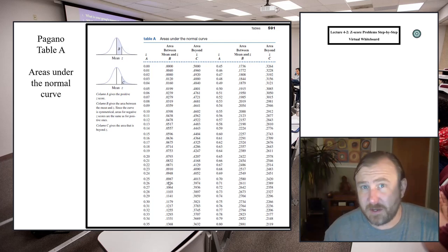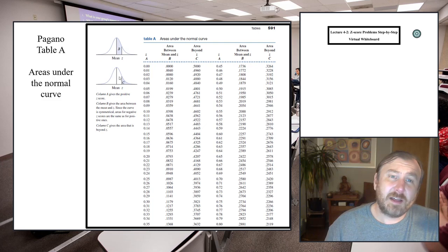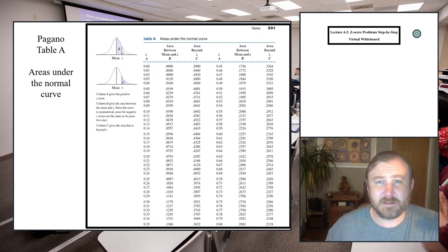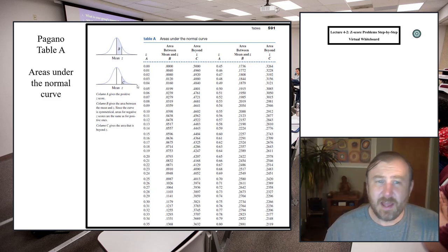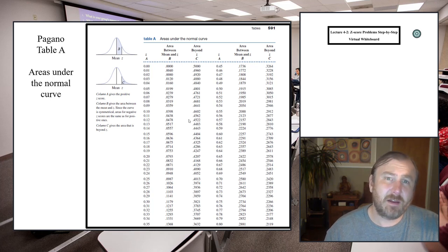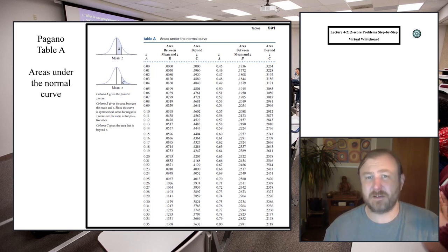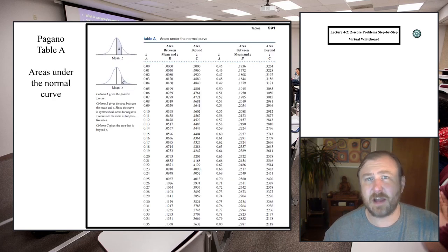We can easily convert a proportion into a percent by just moving the decimal point over two spots. In some cases we may want the proportion between the mean and some value. Other times we want the proportion between a point and the tail — that's what column C gives you. Without complicating this anymore, let's just go through an example, and after that I can show you some more interesting properties.